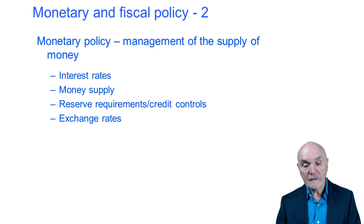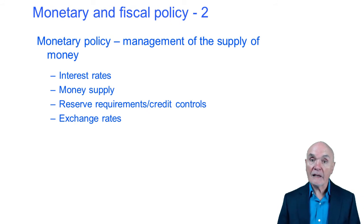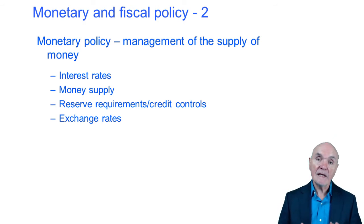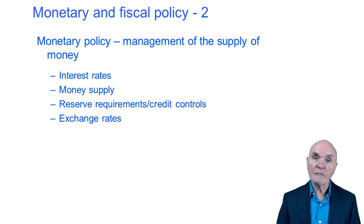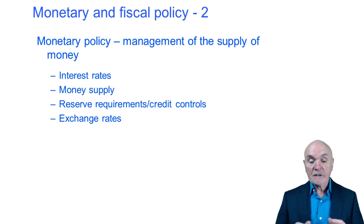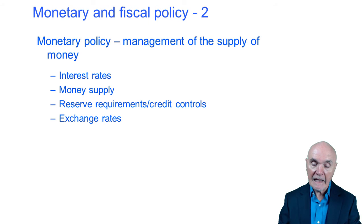The other method is monetary policy, which is looking at how the government can manage the supply of money. The central bank does it by interest rates — the lower the interest rates, the easier it is to borrow, the more money people will borrow, and that's going to increase the supply of money and stimulate the economy. There is also the money supply itself — the government can increase or decrease the money supply. It's not called printing money anymore, it's called quantitative easing, but it makes much more money available to banks which they can then lend on.